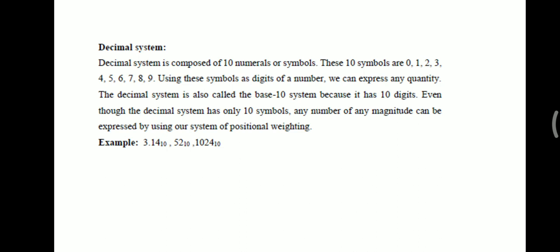For example, 3.11 to the base 10 — the base 10 represents the decimal number system. Similarly, 52 to the base 10 denotes the decimal number system. By looking at the base, we can identify what number system is being used — whether decimal, octal, or others. Even though the decimal number system has only 10 symbols, any number of any magnitude can be expressed using a system of positional weightage.